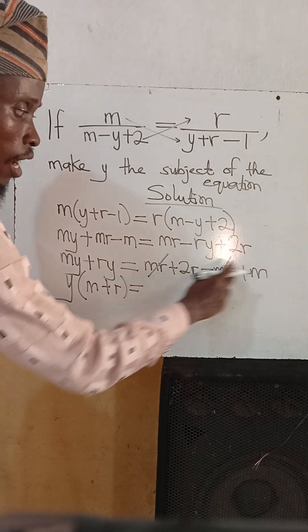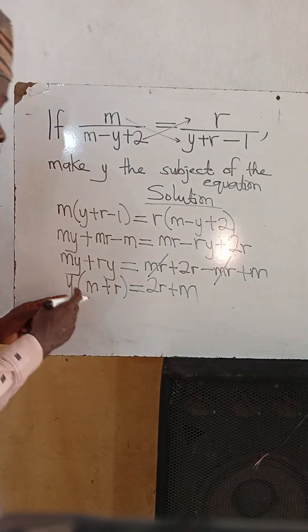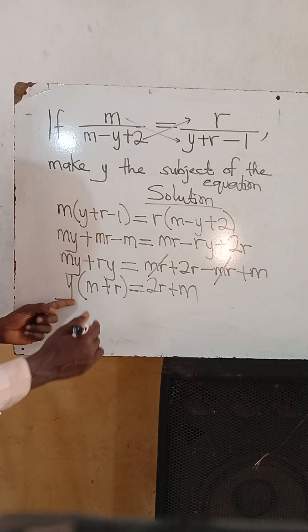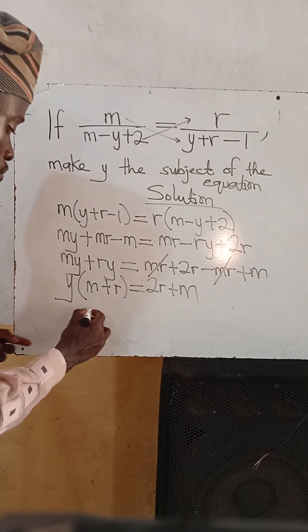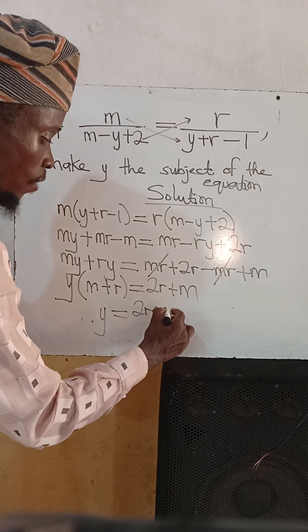I have 2r plus m. That is 2r plus m. So we are looking for y. We have to divide both sides by what is disturbing us. Therefore, y is equal to 2r plus m all divided by m plus r.